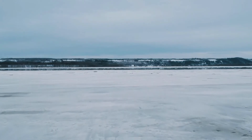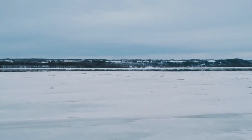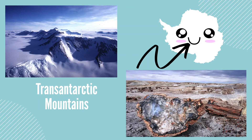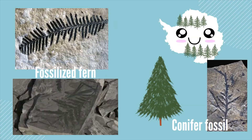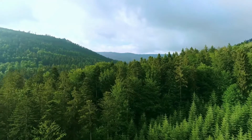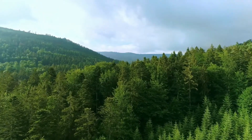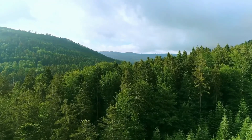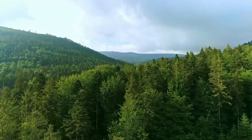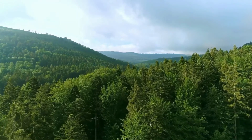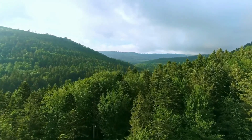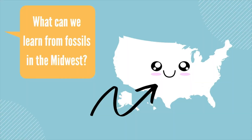Antarctica doesn't get much rain and is therefore an icy desert. In the Transantarctic Mountains, which run through Antarctica, fossilized trees have been found that are 260 million years old, which are older than dinosaurs. Other plant fossils found include fossilized fern leaves and conifers. These plants show that Antarctica used to be covered in a forest filled with mosses, ferns, and conifers, like Christmas trees. This means Antarctica had a prehistoric environment that was a much warmer climate than it is today, so it could support a rainforest.